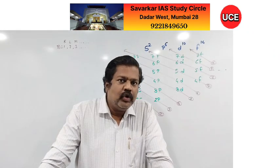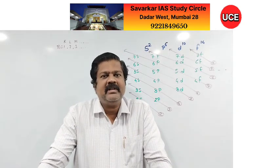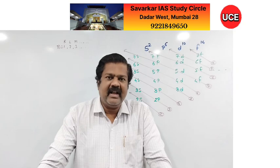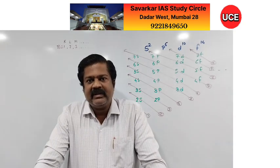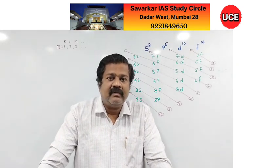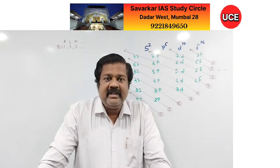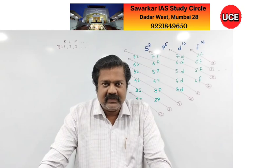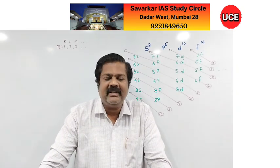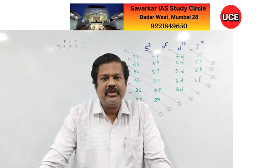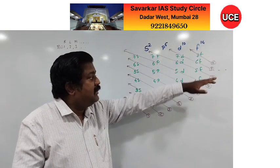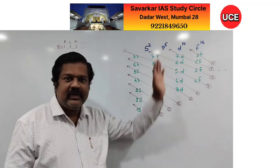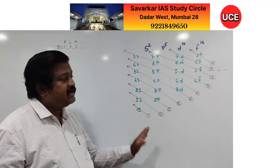The last naturally occurring element is uranium, atomic number 92. From 93 onwards, all elements are synthetic. New elements with atomic numbers 100, 105, 107, 111, etc., have been discovered — all are synthetic. Uranium has 5f as the last shell; 6f and 7f are absent in uranium.